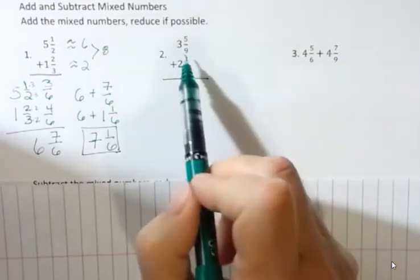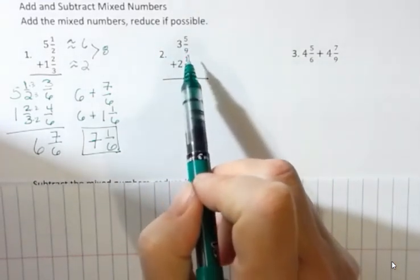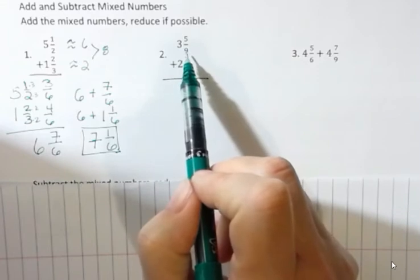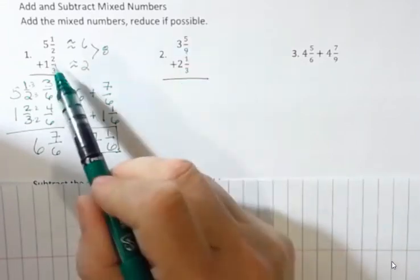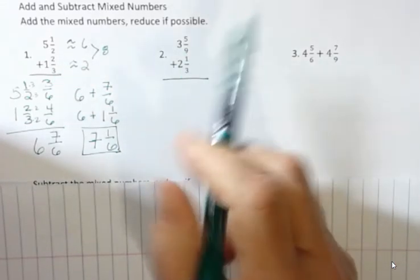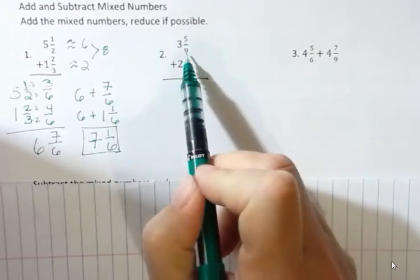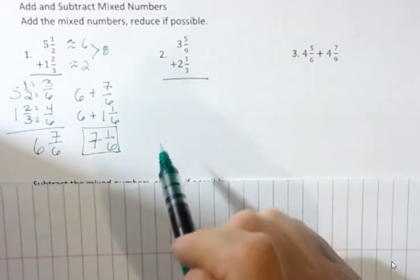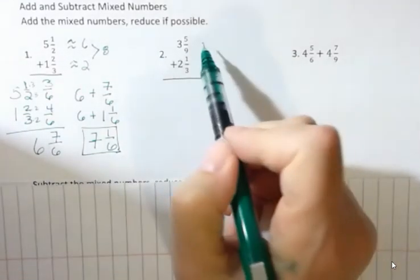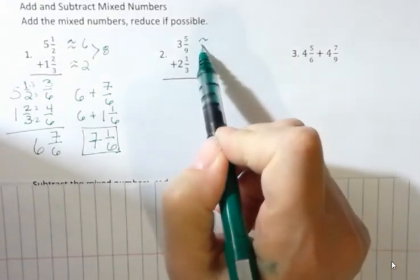What about this one? Three and five ninths. Is that going to be rounding up to four or down to three? How do you know? How did I know two thirds was more than a half? Let's talk about that for a second. Half of nine would be four and a half, and five is more than half of that. So that's more than a half. So that means that would round up to be approximately four.